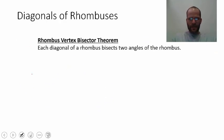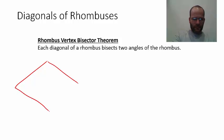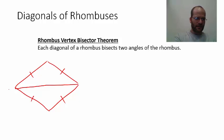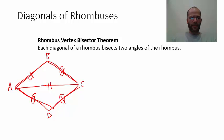We have the rhombus vertex bisector theorem — I'm just making up these names, feel free to use your own. It says each diagonal of a rhombus bisects two angles of the rhombus. We'll draw a rhombus here, a parallelogram with four congruent sides, and ask whether the diagonal bisects two angles. Triangle ABC is congruent to triangle ADC by side-side-side: two congruent sides on each, and the shared side congruent to itself by the reflexive property.